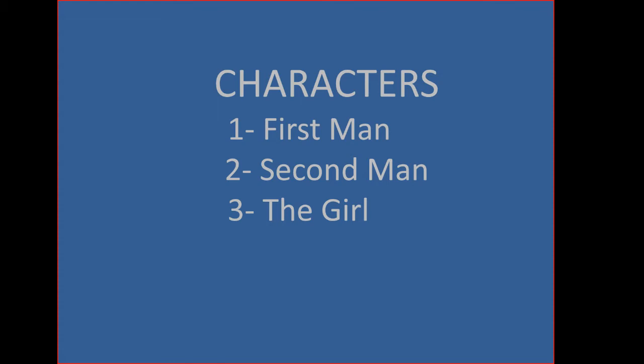There are three characters taking part in the action of the play, and they are named rather ambiguously. The first character is called the first man, the second character is called the second man, and the third character is a young pretty girl who is 23 years old. The whole play revolves around an incident that happens with her at late night.